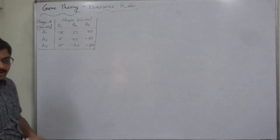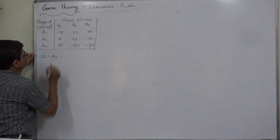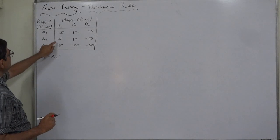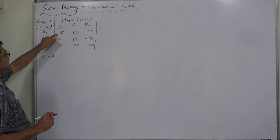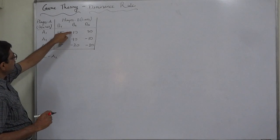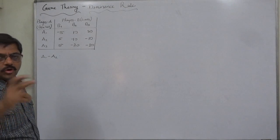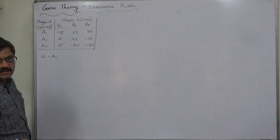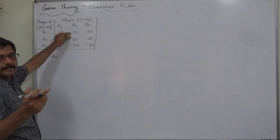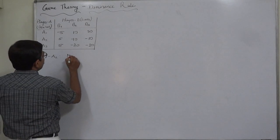Let's begin with player A and compare A1 and A2. In case of B1 selected by B, A2 dominates A1. But in case of B2 selected by B, A1 dominates A2. So across all three possibilities, no strategy continuously dominates the other — the dominance changes with B's strategy choice. So there is no continuous dominance between A1 and A2.